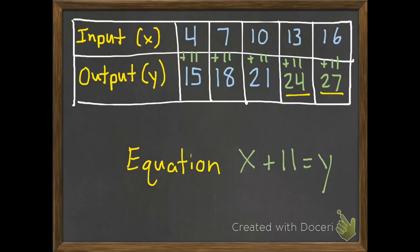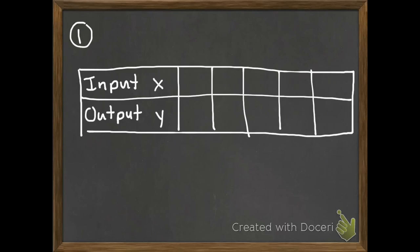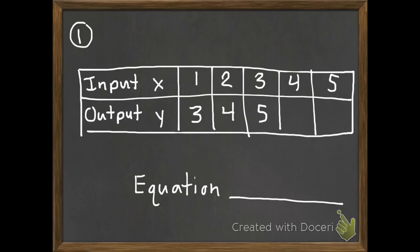Hopefully you're ready to try a couple on your own. Number one: make a table — you can make it sideways or up and down. Our inputs are 1, 2, 3, 4, 5. When we put in 1 we got 3; put in 2 we got 4; put in 3 we got 5. You need to figure out what the equation is — x plus something equals y, or x subtract something equals y — and then complete the table. Go ahead and pause until you're done, then start again to move on to the next one.